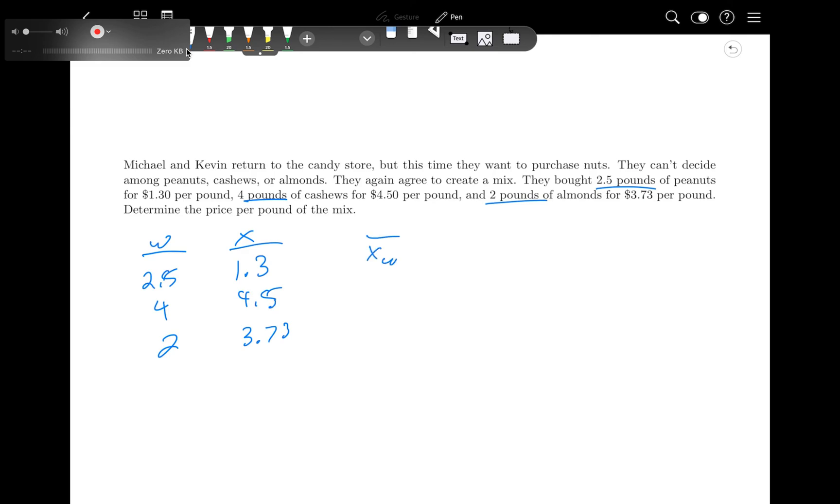So this would be 2.5 times 1.3. I'm going to use parentheses here because it's a little confusing with the decimals. 4 times 4.5, and 2 times 3.73, all over 2.5 plus 4 plus 2. And so I get $3.38 per pound.